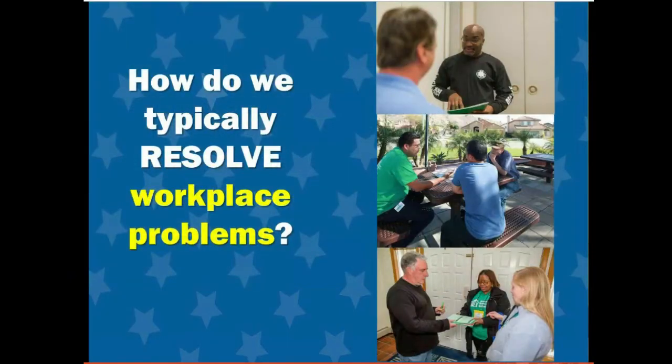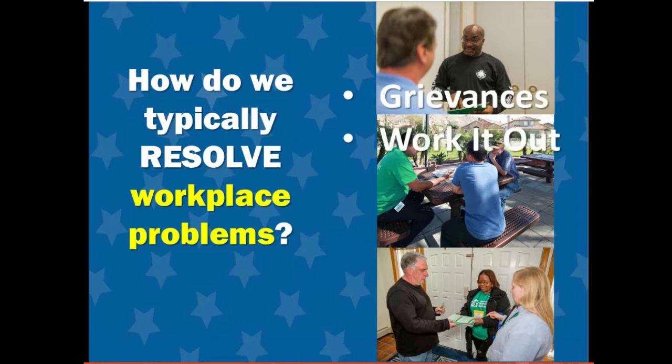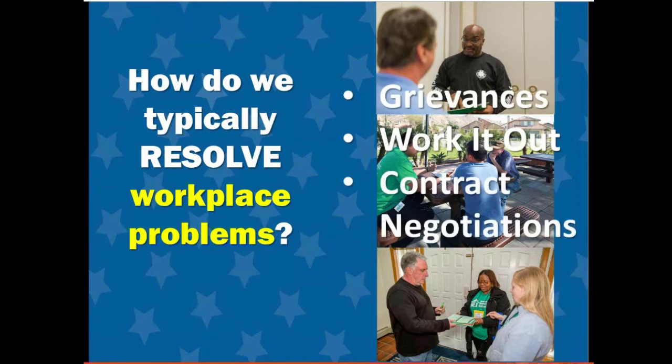When faced with a problem in the workplace, very often we'll file a grievance — we call this using legal power. Or we have the local president or staff rep try to work it out with the boss — we call this utilizing relationship power. Or we might tell folks we'll just have to wait for contract negotiations to come around again.